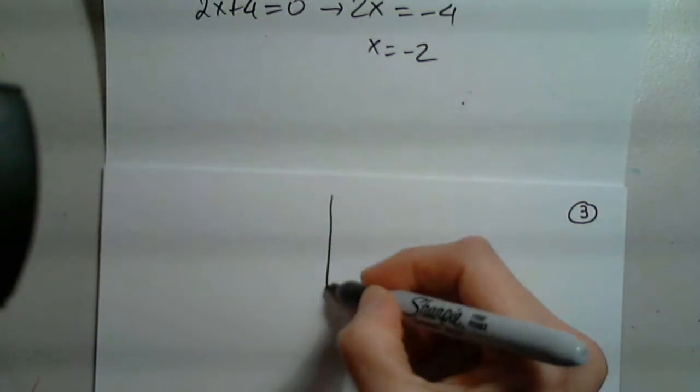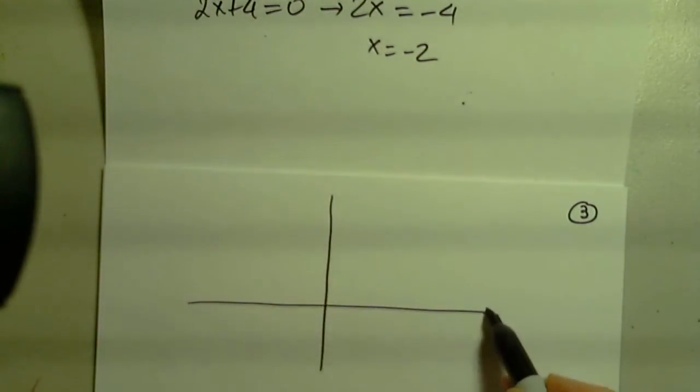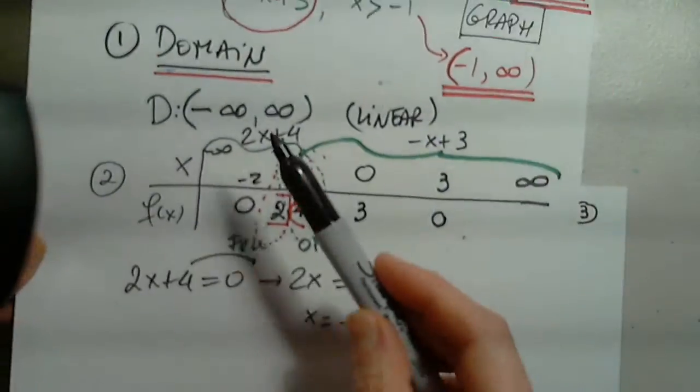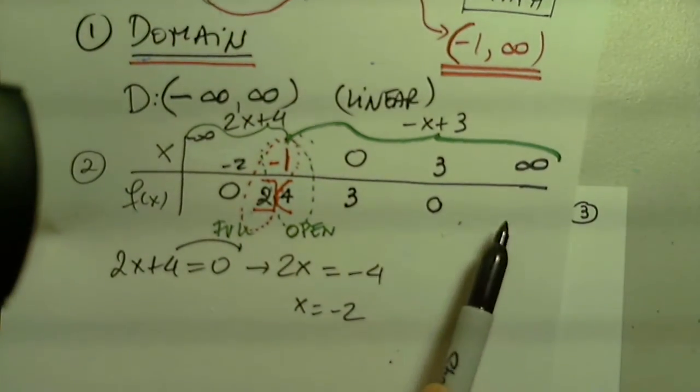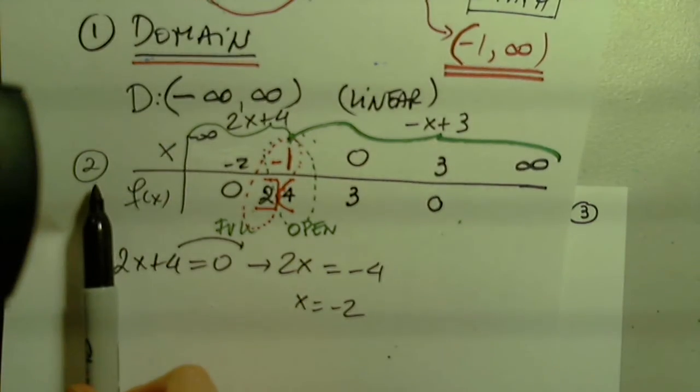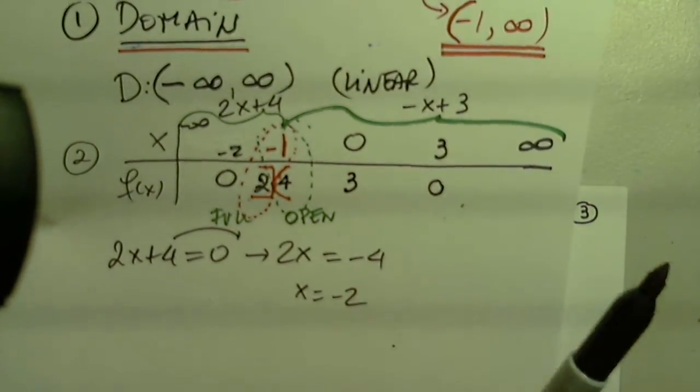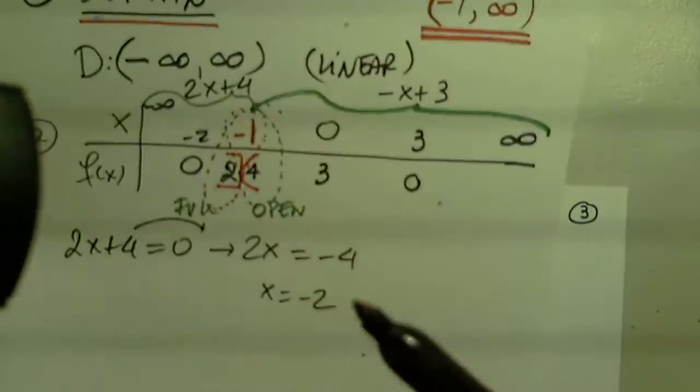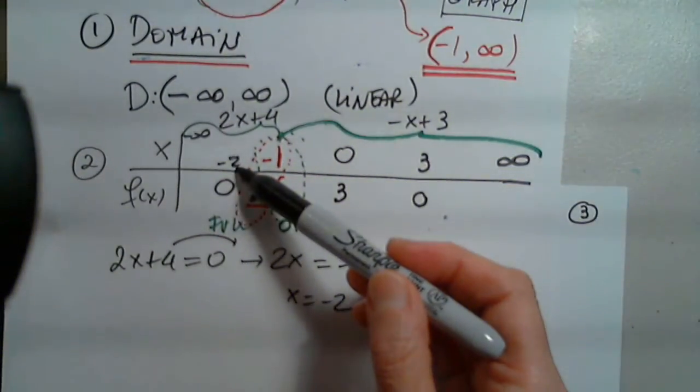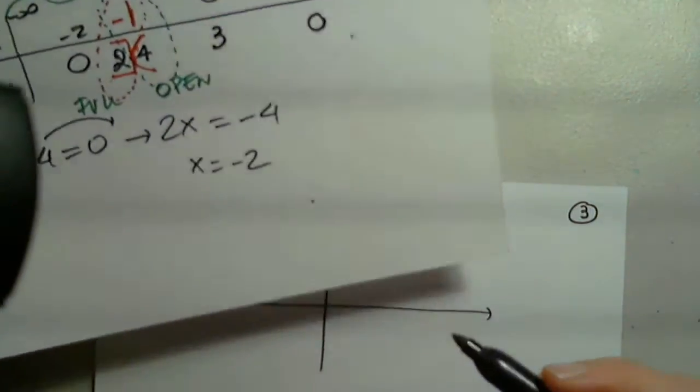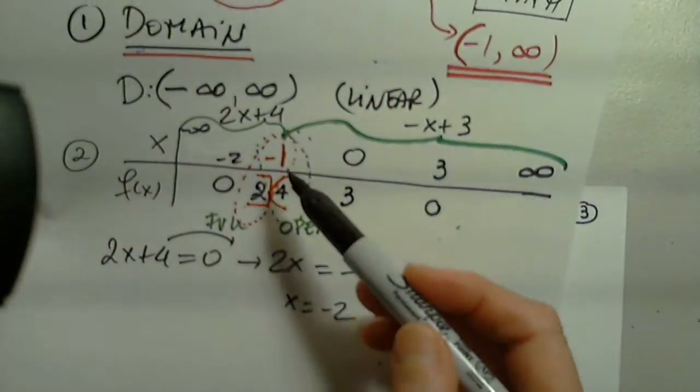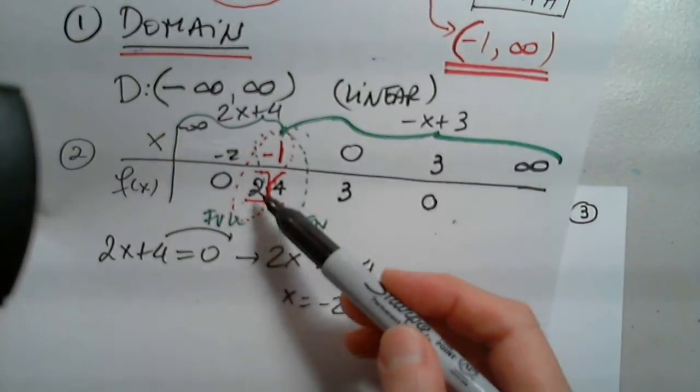So now we're going to graph this function. This is step three. One more time: domain step one, table of ordered pairs step two, always look for the x and y intercepts, step three graph, and step four will be the range. Okay, negative two for x, zero for y, negative one for x, two for y.